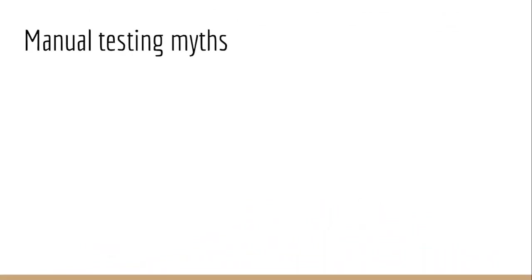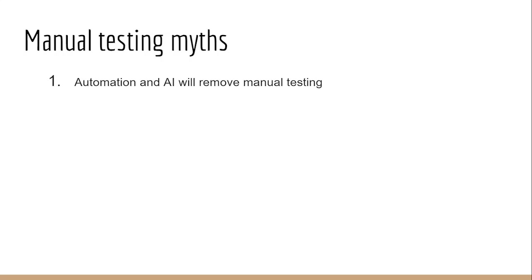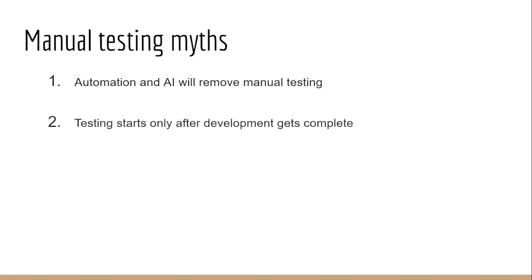Manual Testing Myths: Myth one — Automation and AI will remove manual testing. There are many kinds of testing that can only be performed by humans, like exploratory testing, usability testing, and UI testing. Also, even for conventional forms of testing, manual testing is required until the application becomes stable and automation scripts are written. Myth two — Testing starts only after development gets completed. The testing phase can start as early as the requirements phase.